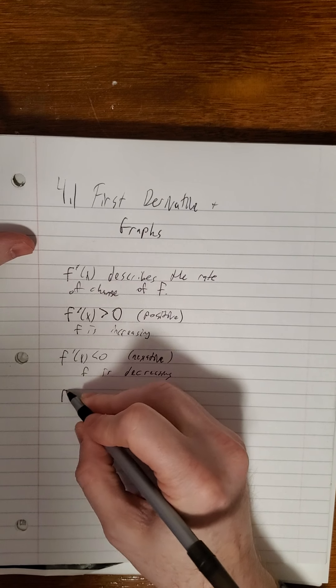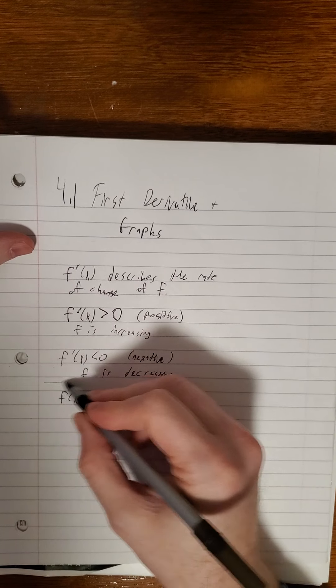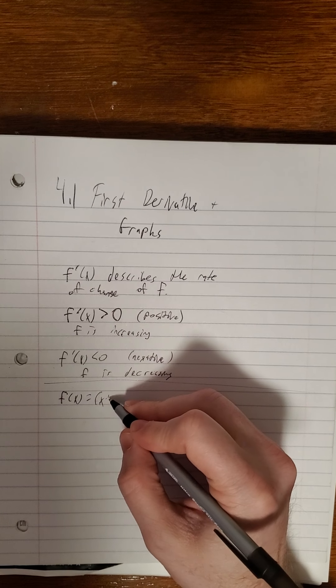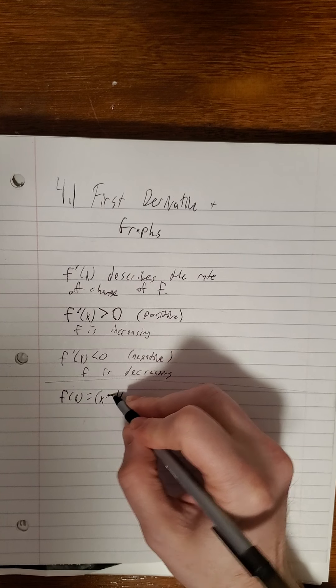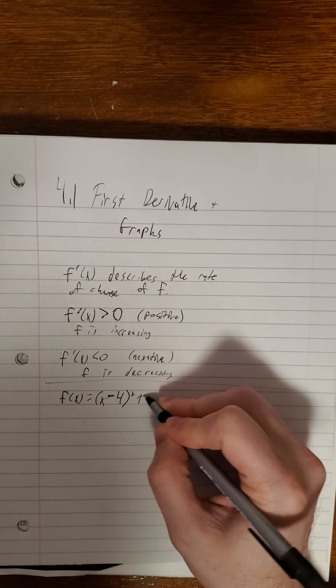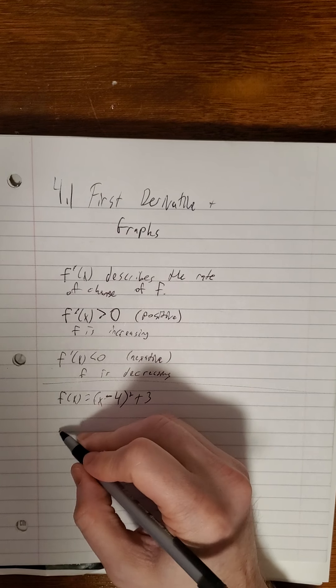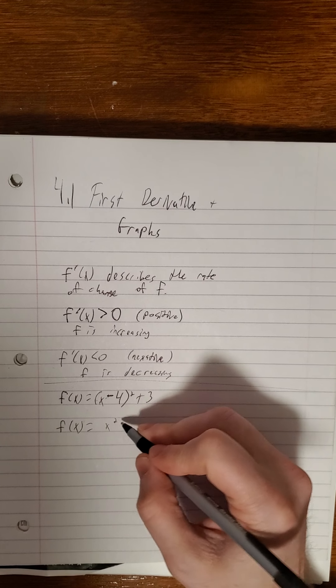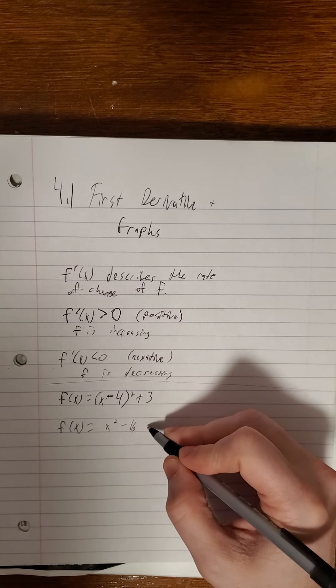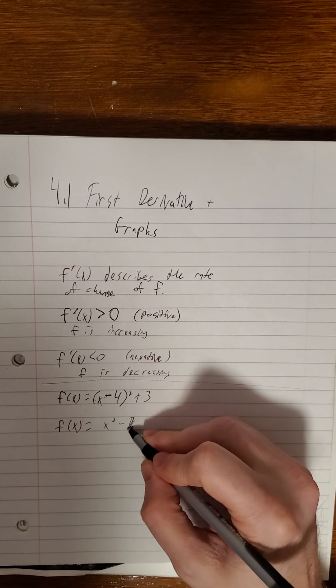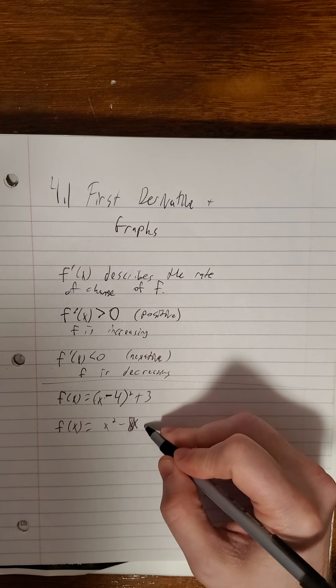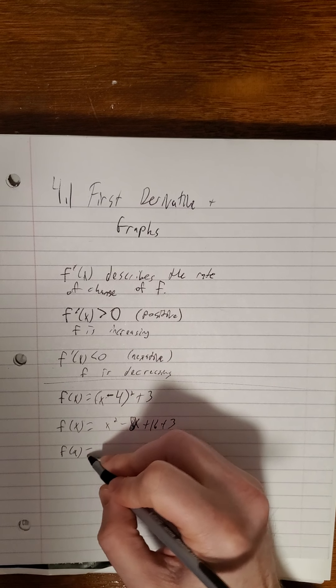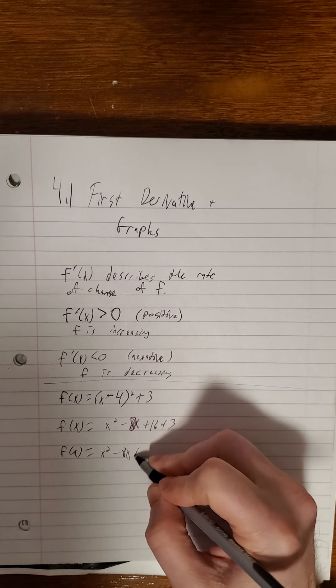So we'll consider just a quick example of a parabola. f of x is x minus 4 quantity squared plus 3. As far as making that easier to differentiate, we'll look at a simplified version of that x squared minus 8x plus 16 plus 3 or simply f of x is x squared minus 8x plus 19.